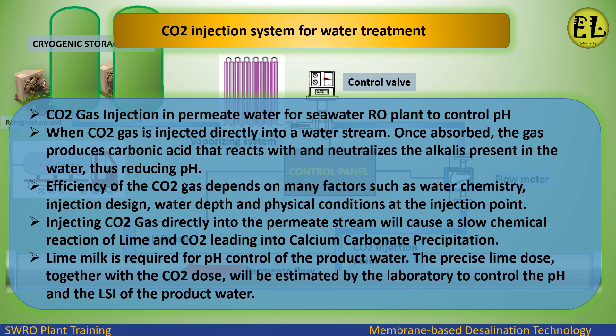CO2 gas injection in permeate water is used in seawater RO plants to control pH. When CO2 gas is injected directly into a water stream, once absorbed, the gas produces carbonic acid that reacts with and neutralizes the alkalis present in the water, thus reducing pH. The efficiency of CO2 gas injection depends on many factors such as water chemistry, injection design, water depth, and physical conditions at the injection point.